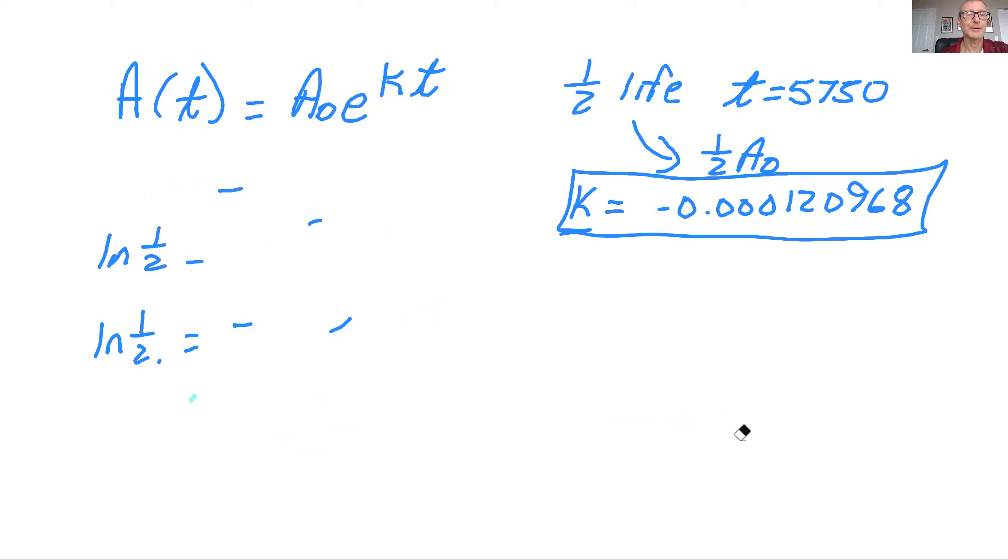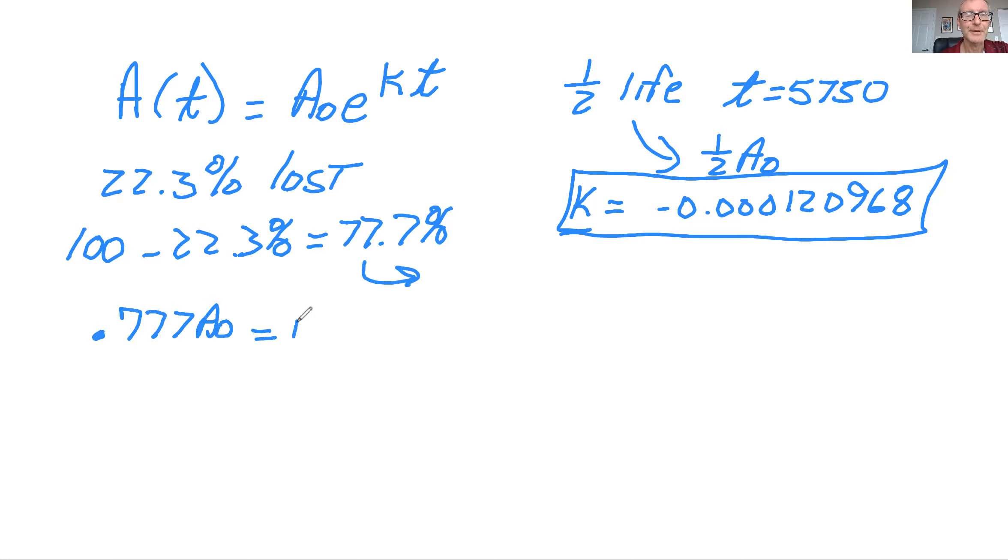So you'll see that we're going to have to plug in all the appropriate numbers. So if 22.3% is lost, what do you have? Well, you'd have 100 minus the 22.3%, and that would be 77.7%. But remember, we'll end up putting it in as a decimal. So if you start with 100%, you could write the equation this way: 0.777 times A₀ equals A₀e^(kt). And now we know this K times T.